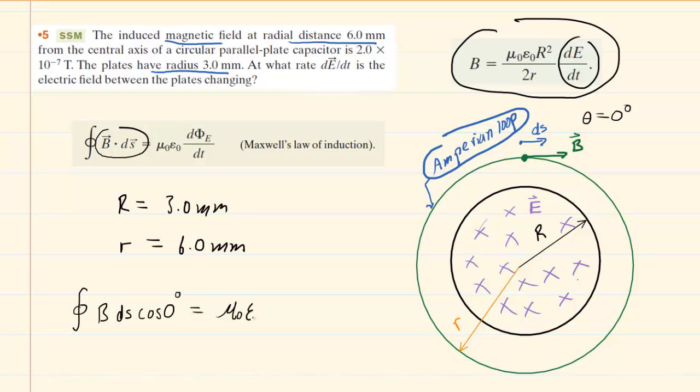Over on the other side of the equation, we have the rate of change in the electric flux. Electric flux is equal to an electric field times an area. The electric field is symbolized by these purple crosses, and then the area would be the actual area of the circular plate. We're going to rewrite the derivative as the derivative of EA with respect to time.